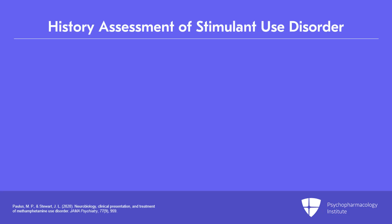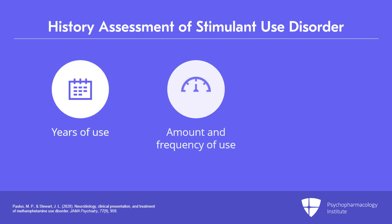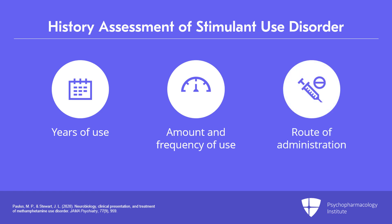There are areas of the history that are very valuable to obtain in order to treat this disorder the best. That would include the number of years of use, the amount and frequency of their use, and the route of administration, which can vary from oral to intranasal to smoking to intravenous.